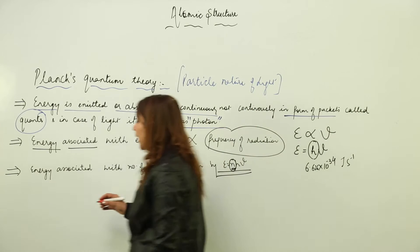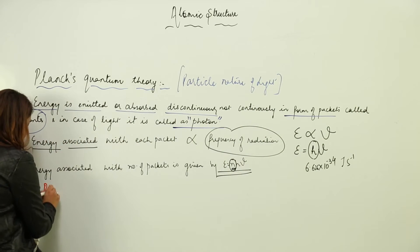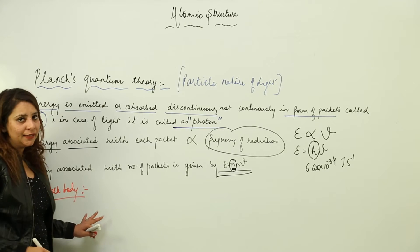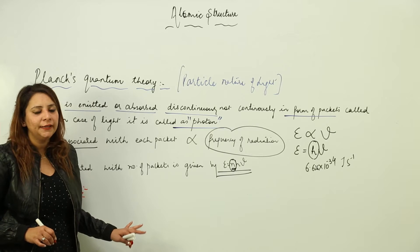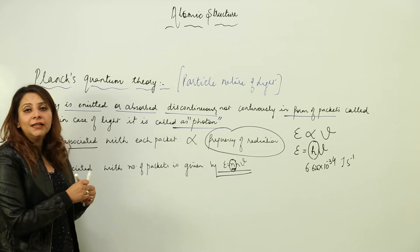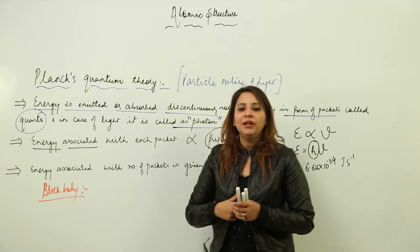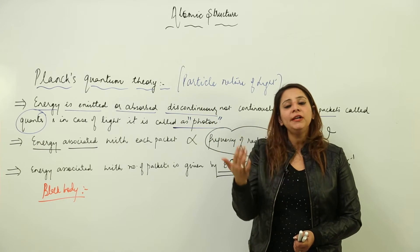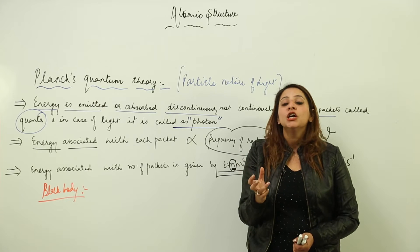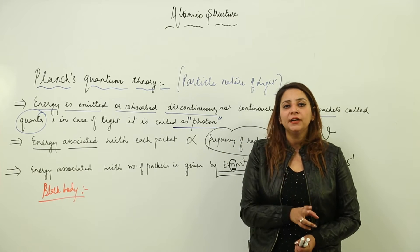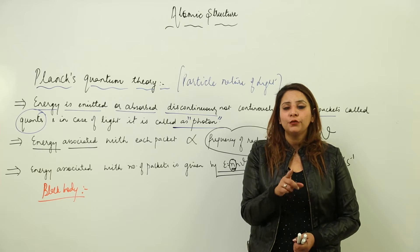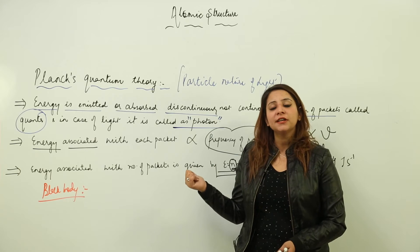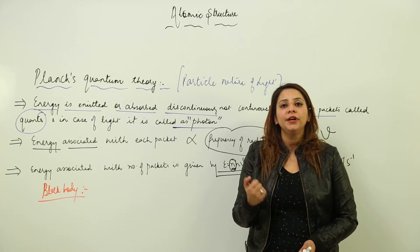The phenomena we are going to discuss now are black body radiation and the photoelectric effect, because these phenomena could not be explained by electromagnetic wave theory. When we study a black body, when we heat it, at different temperatures we see a change in color. According to electromagnetic wave theory, the intensity may change but the frequency or color should remain the same.